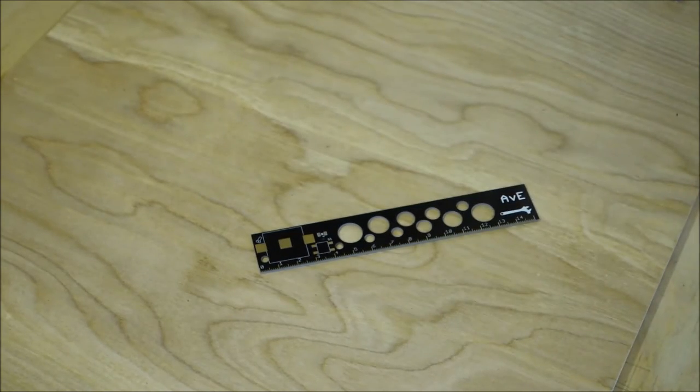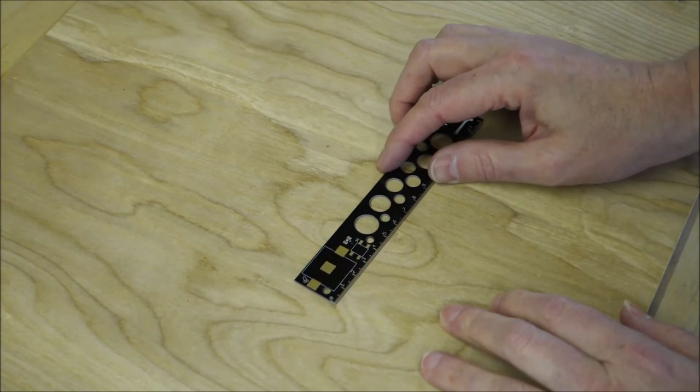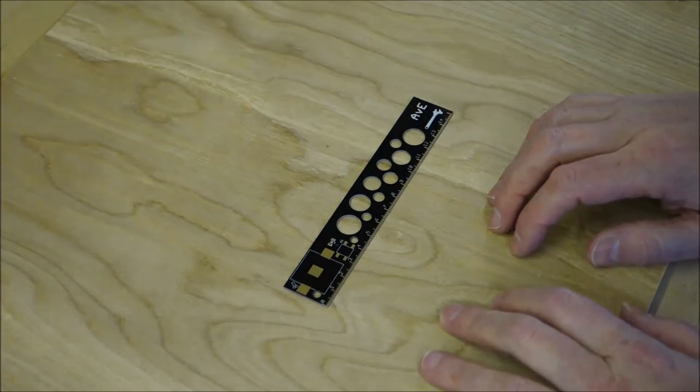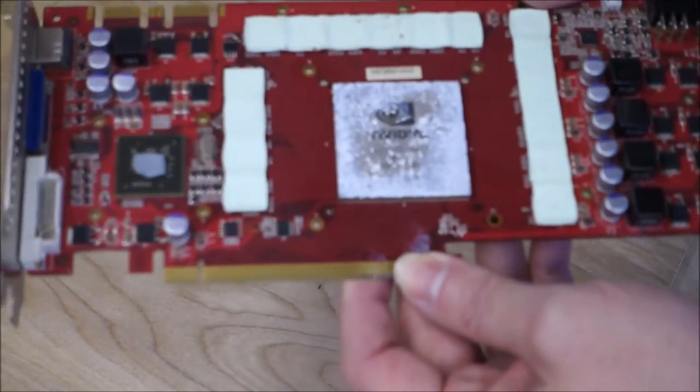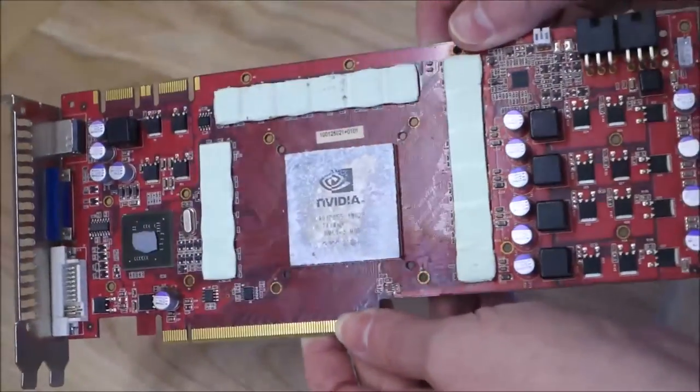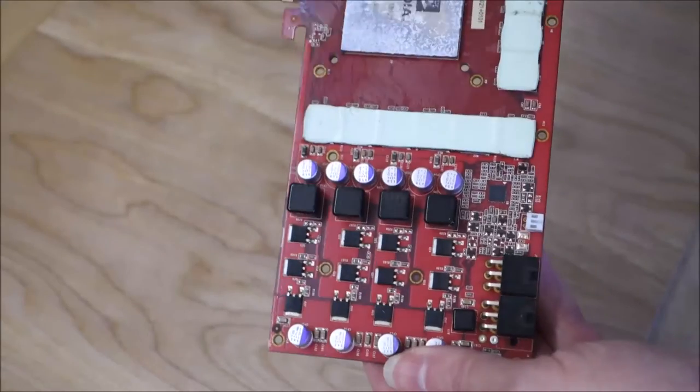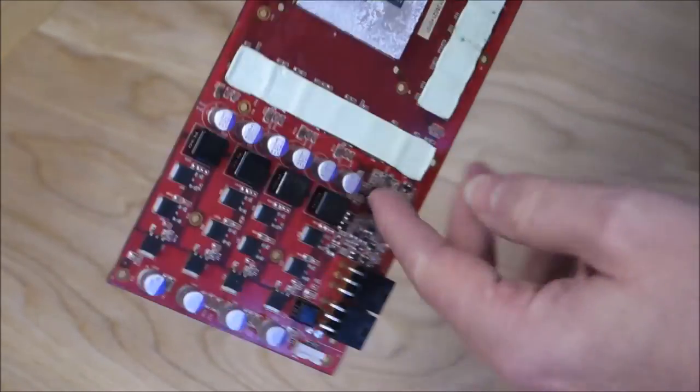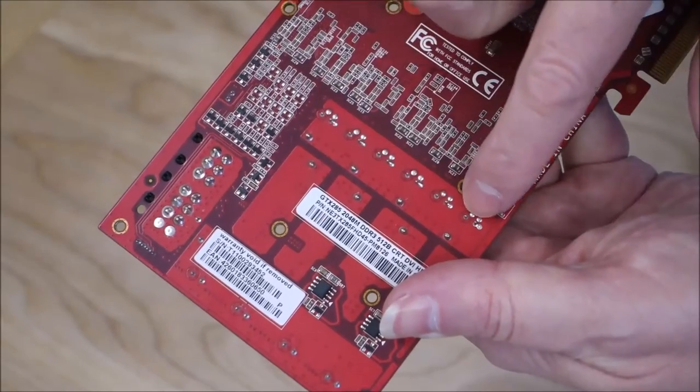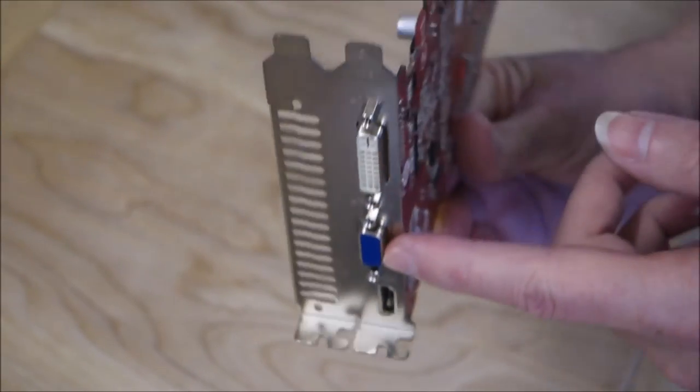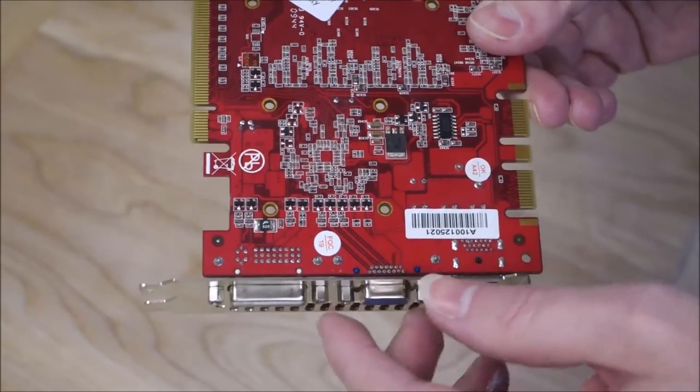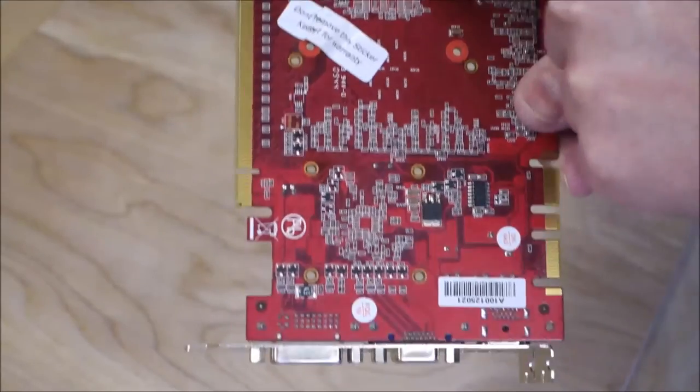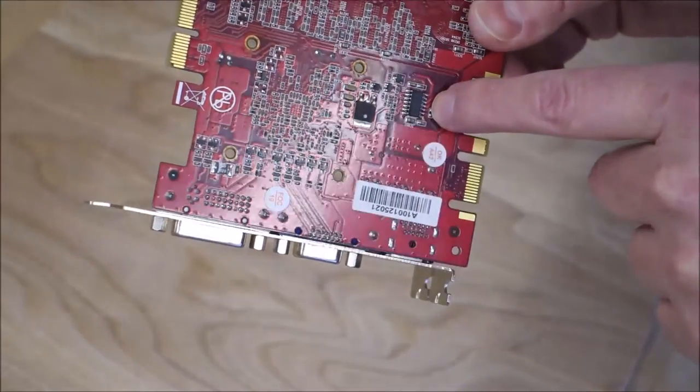To give you an idea of what we're talking about with surface mount and through hole, I've got here an old graphics card. This is a perfect example because it has a combination of both types of technology. You can see down here we've got all these capacitors and they are actually soldered through the circuit board. With the DVI, VGA, and HDMI sockets on the end here, they're also soldered through. But you'll also see that there are a huge number of surface mount components on here.